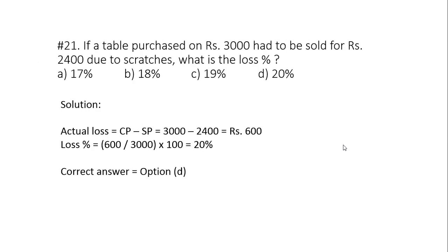Question number 21. If a table purchased on rupees 3000 had to be sold for rupees 2400 due to its crashage, what is the loss percentage? It's very simple. The cost price is 3000 and selling price is 2400. So clearly there is a loss of 600 rupees. Now convert 600 rupees into percentage. So 600 divided by 3000 into 100 gives 20%. Correct answer is D.